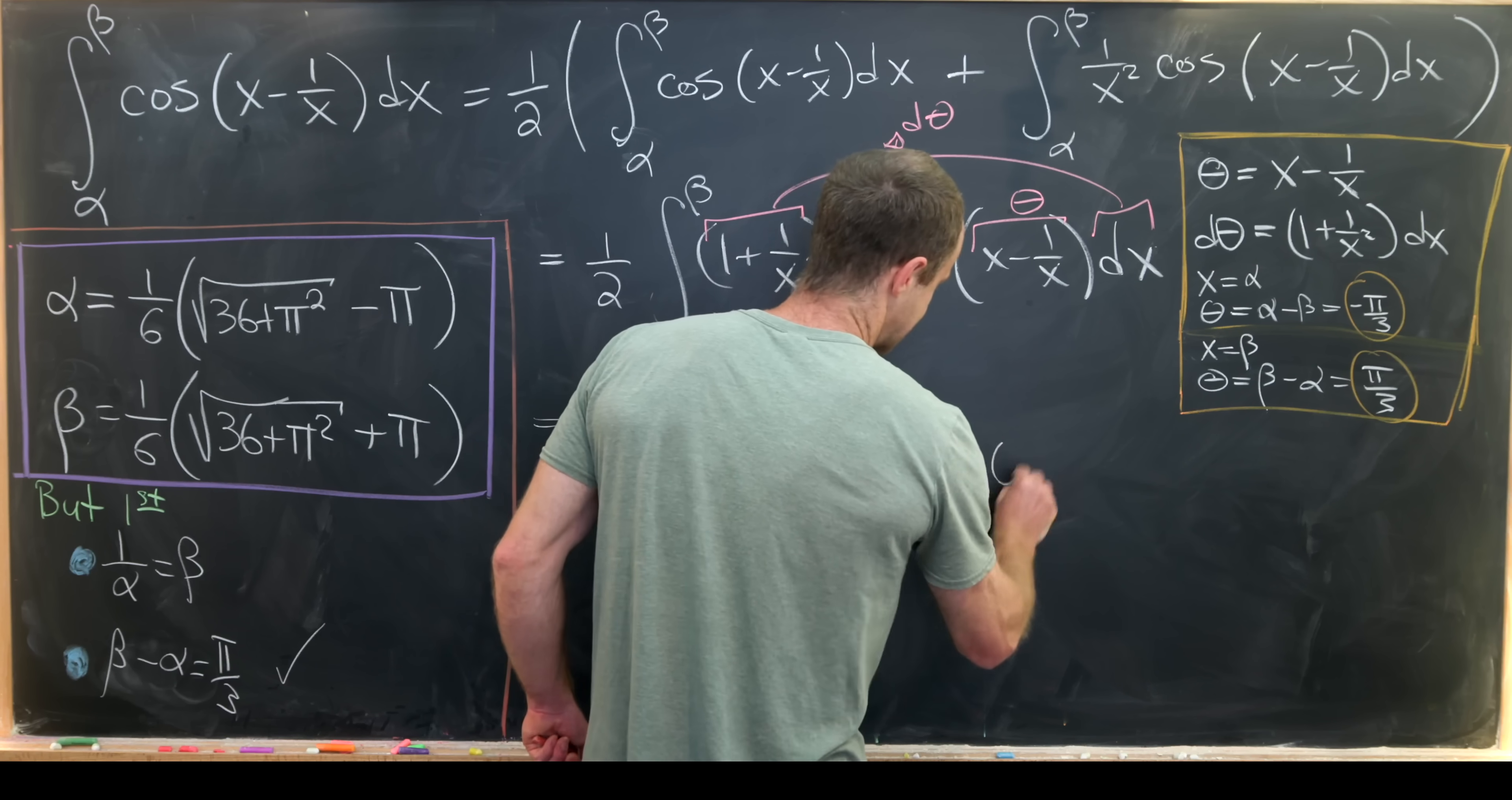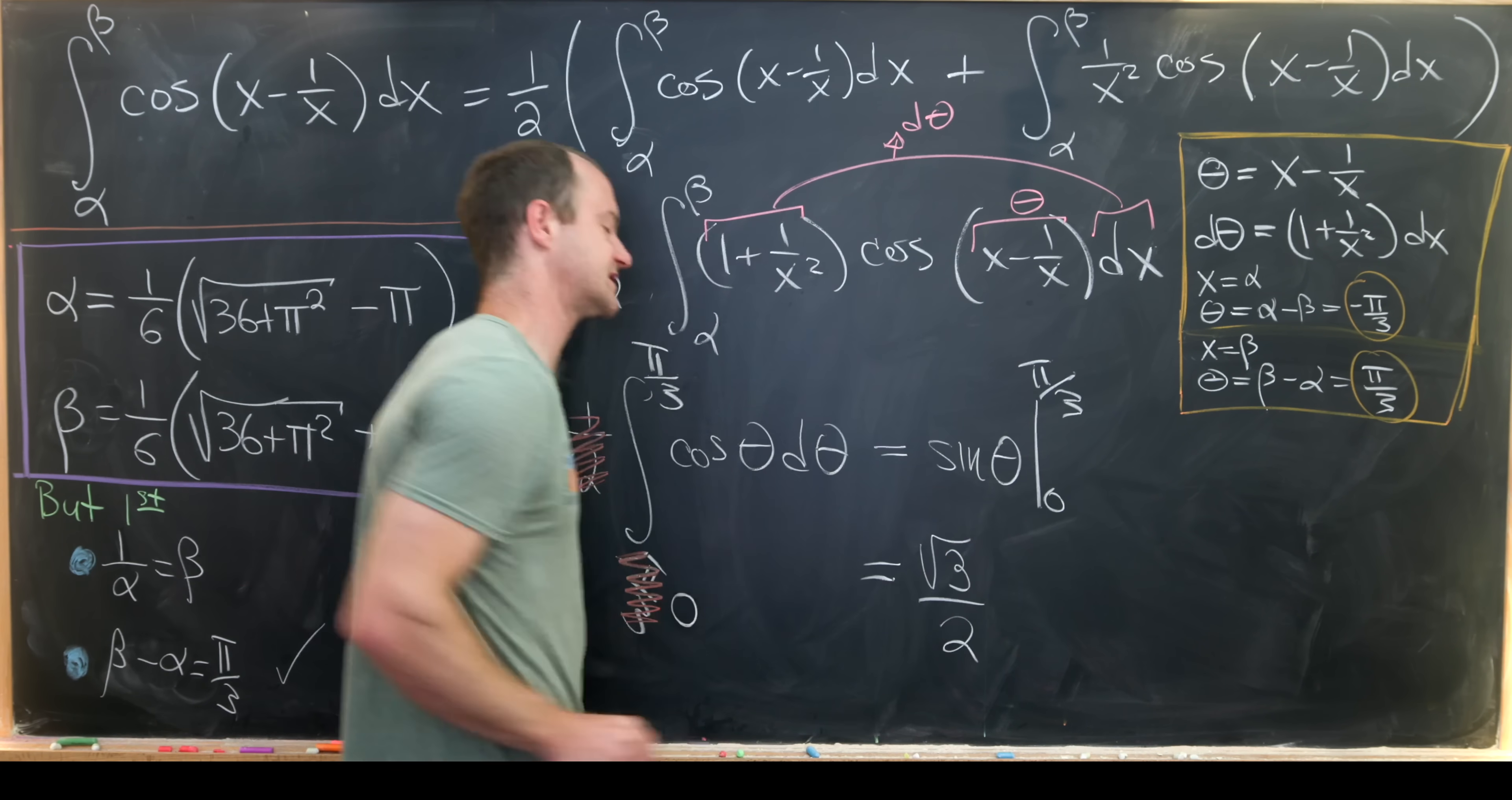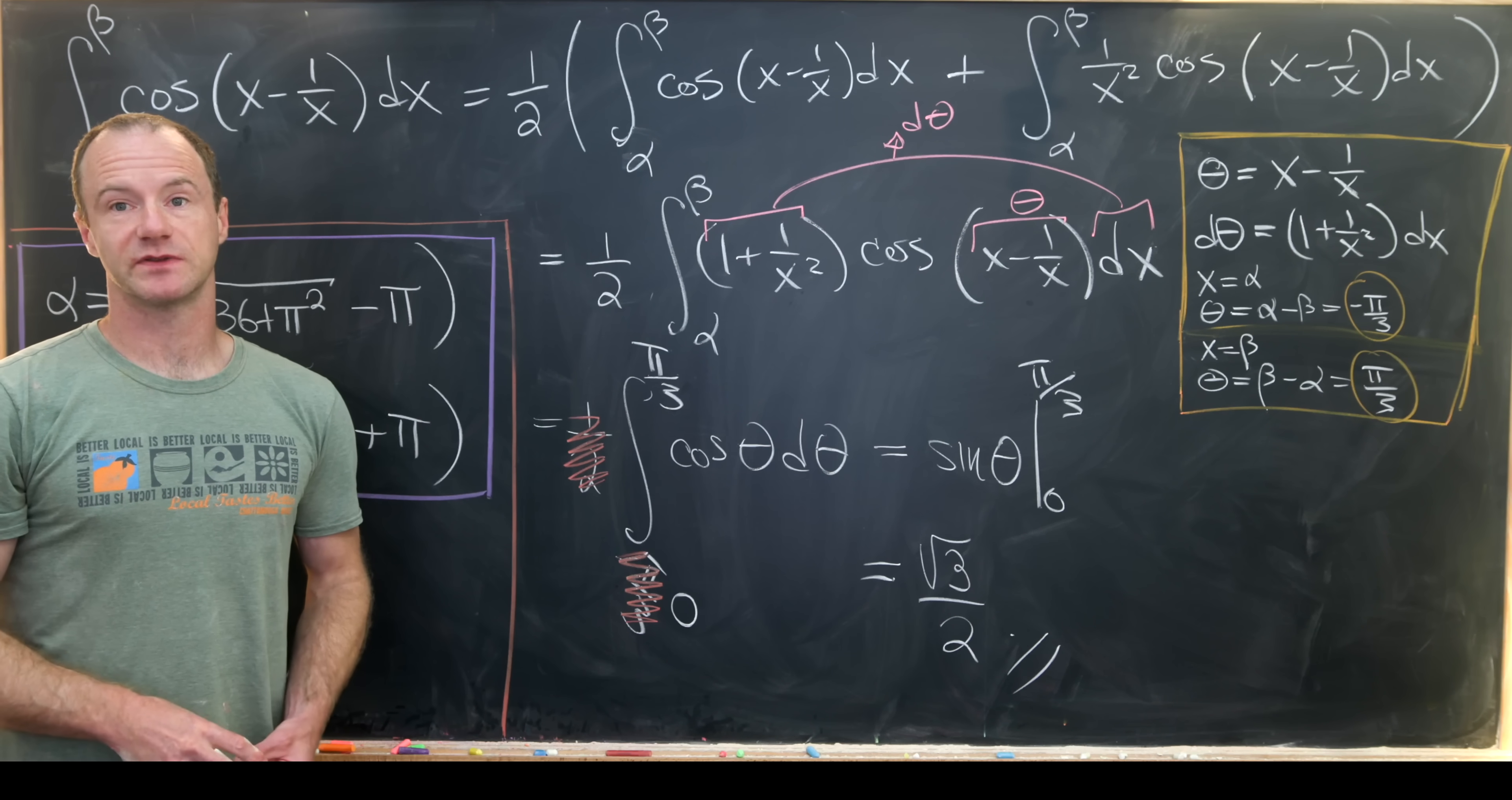So we can have a nice simplification there and now we can apply the fundamental theorem of calculus. That gives us the sine of theta evaluated from 0 to pi over 3. The sine of pi over 3 is in fact the square root of 3 over 2. The sine of 0 is 0 so our final answer here is the square root of 3 over 2 and that's a good place to stop.